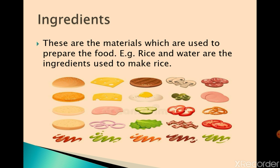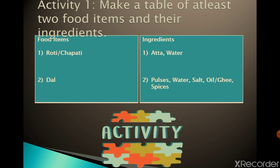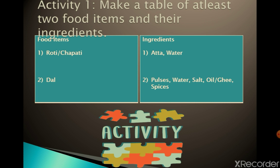For example, if I want to prepare rice, then rice and water are the ingredients used to make it. Let's start an activity: make a table of at least two food items and their ingredients. The first food item is Roti or Chapati. The ingredients your mother uses are aata and water.